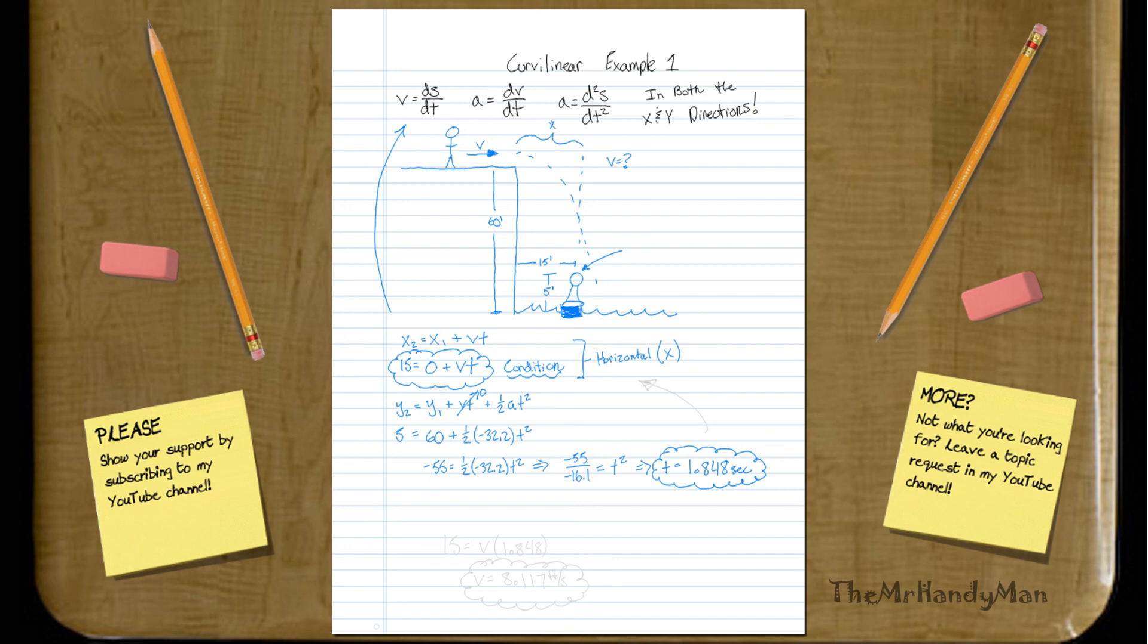But what's our condition? We need to go 15, our condition's up here from the horizontal analysis, right? So we just plug that in to our condition. We know that we have 15 is equal to, essentially, VT, right? So V times T,